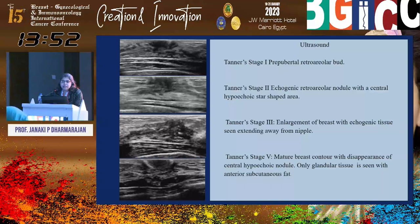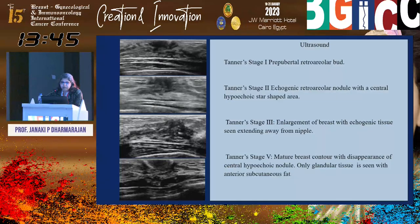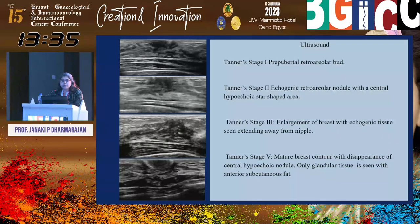For pediatric cases, keep the Tanner staging image readily available as we may not deal with it regularly. Tanner stage 1 is the prepubertal retroareolar bud. Stages 1 through 3 can be differentiated on imaging; stage 4 usually merges with stage 5. In stage 5 Tanner, we see a mature breast tissue contour with disappearance of the central hypoechoic nodule.